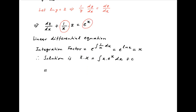Replacing z with ln y, the solution is x times ln y is equal to the integral of x times e raised to the power x, which using integration by parts is equal to x times e raised to the power x minus e raised to the power x, plus the constant of integration. This is the required solution.